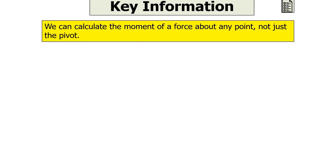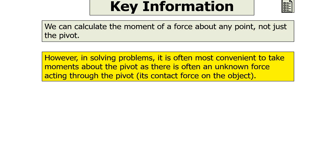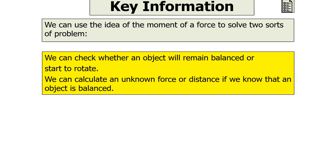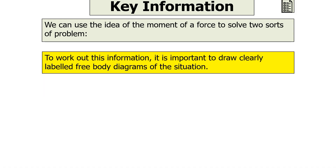We can calculate the moment of a force about any point, not just a pivot. However, in solving problems, it's often most convenient to take the moments about the pivot, as there's often an unknown force acting through the pivot — its contact force on the object. We can use the idea of a moment to solve two sorts of problems: we can check whether an object will remain balanced or start to rotate, or we can calculate an unknown force or distance if we know that an object is balanced. It's important to clearly draw labelled free body diagrams of the situation.